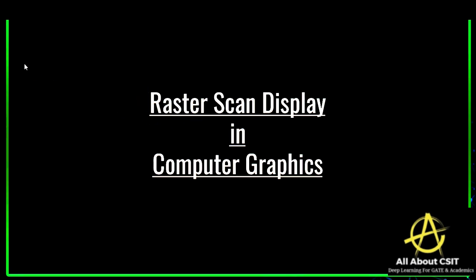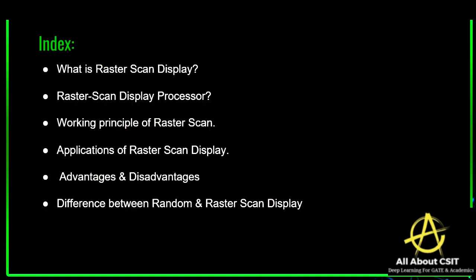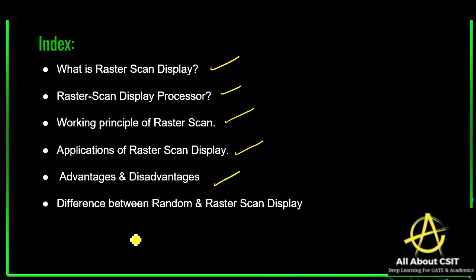Hi students, welcome back. Now let's see the next topic in computer graphics — the raster scan display. In the previous video I explained about the random scan display. In this video I'm going to cover what exactly the raster scan display is, the raster scan display processor architecture, the working principle, different applications, advantages and disadvantages, and the difference between random scan and raster scan.